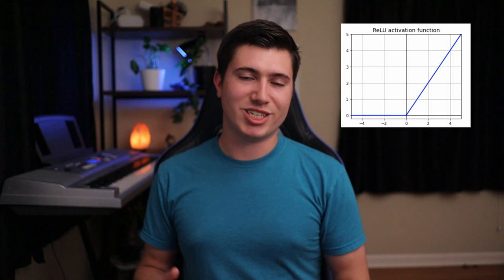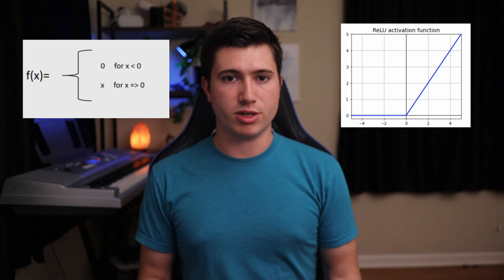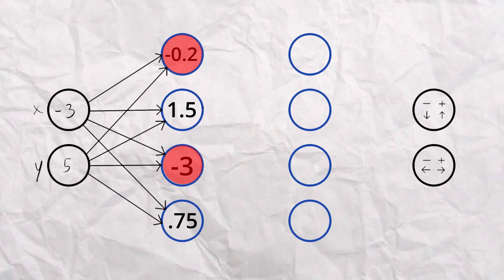After we calculate the value for the node, there's one small step before we could continue, and that's the activation function. The activation function basically decides whether or not we want to use the value we just calculated, or it could also modify it slightly. A very common activation function is called rectified linear, or ReLU for short. Although it sounds a little complicated, this function is actually very simple. It basically just means that if the value of the node is negative, we make it zero, and if the value is positive, we leave it alone. So in effect, this is basically turning off any nodes with a negative value. And this is just one of many activation functions, but it's also the most popular.